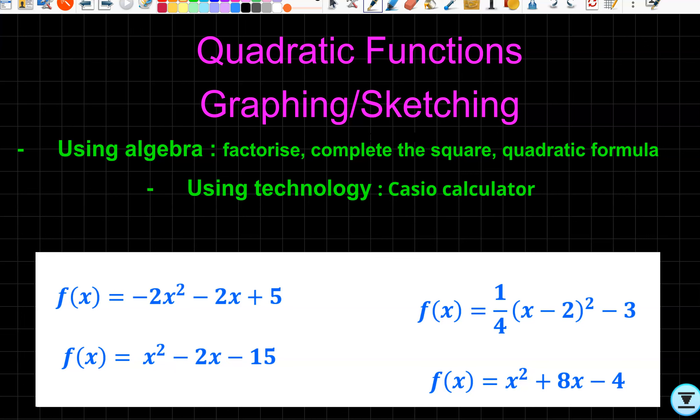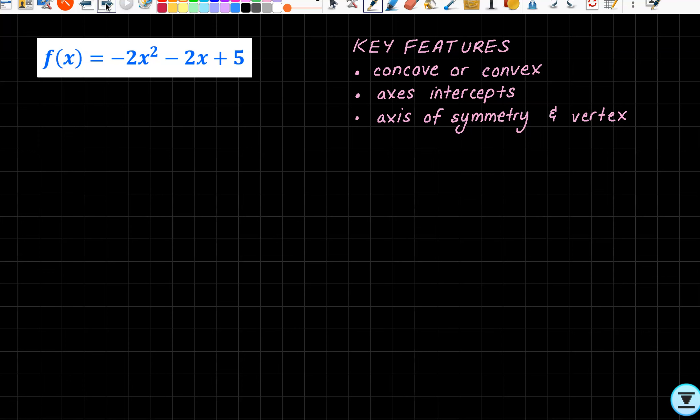If that's not your cup of tea, leave the video now. Otherwise, hopefully this helps. The first one is f(x) = -2x² - 2x + 5. The key features that we need to find: we should know from looking at our equation first concave or convex. We have to do a little bit of work to get our x-intercepts and axis of symmetry and vertex.